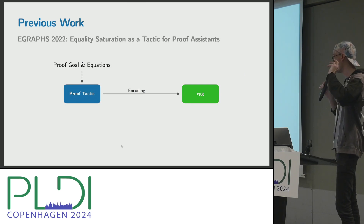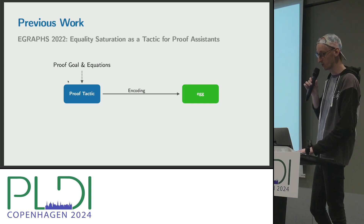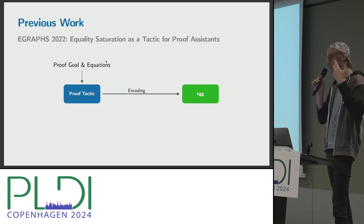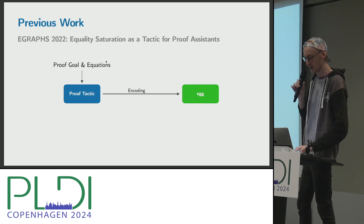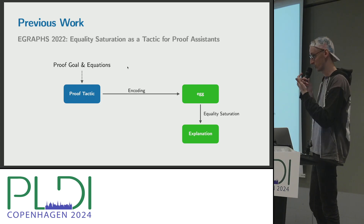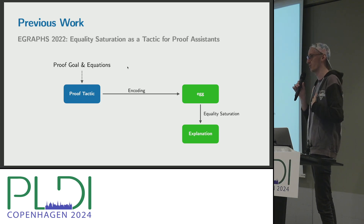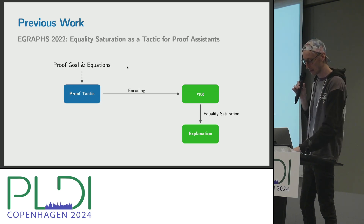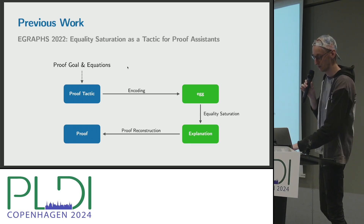Here's an overview of how the equality saturation proof tactic works at a high level. When you call a proof tactic, you start with a proof goal and pass to that tactic a set of equations, called rewrites. The first step is to encode this proof problem into a problem which egg can understand — we use egg as our back-end equality saturation solver. Once we've encoded the problem into egg, we run equality saturation. Crucially, what we get out is an explanation, some sort of proof witness. Because just like in Coq, we have to convince Lean that the proof we found is actually correct. We take the explanation produced by egg, turn it into a proof in Lean, and we're basically done.